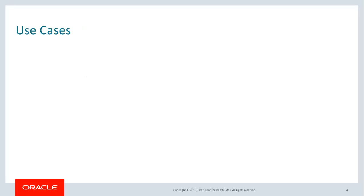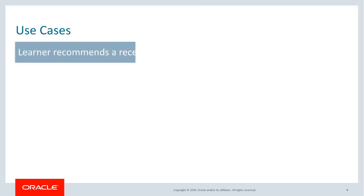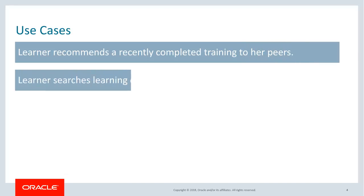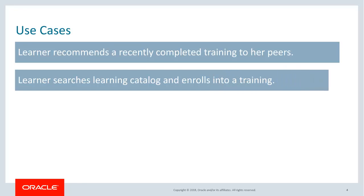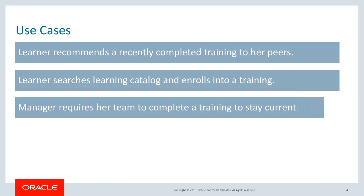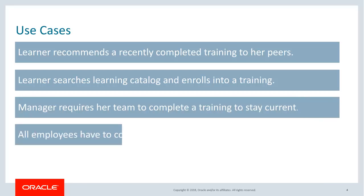Here are a few use cases of how learning is made available or assigned to learners. A learner who recently completed a training recommends it to her peers. A learner searches for a topic of interest in the training catalog and enrolls into a training. A manager requires her team to complete a training to stay current. All employees are mandated to complete a compliance training.